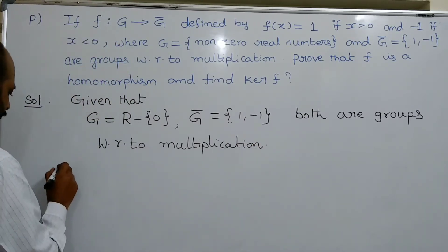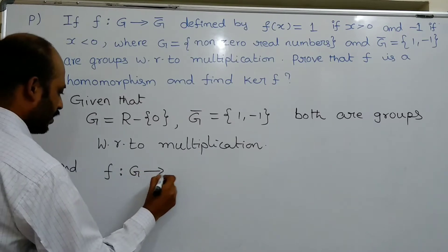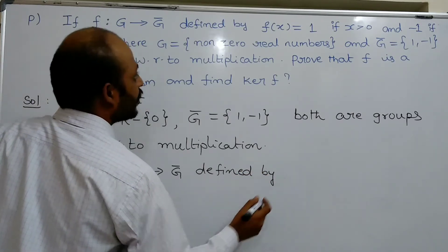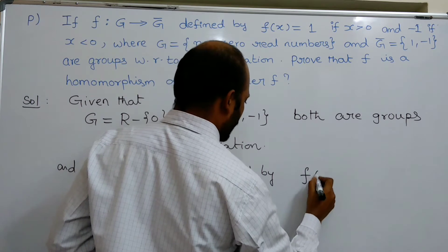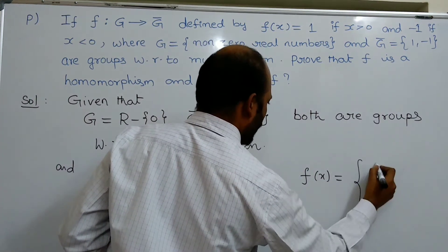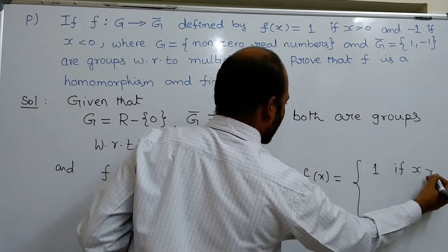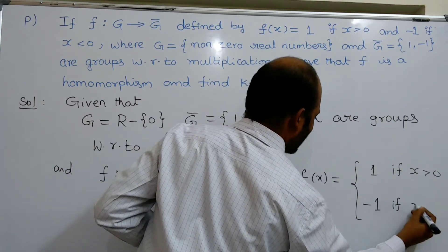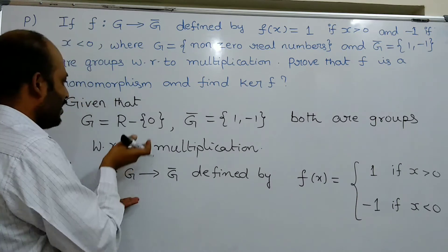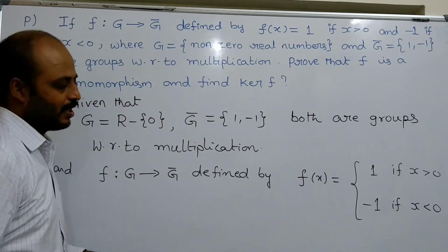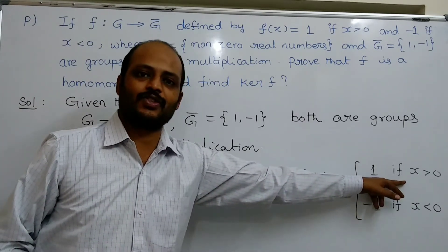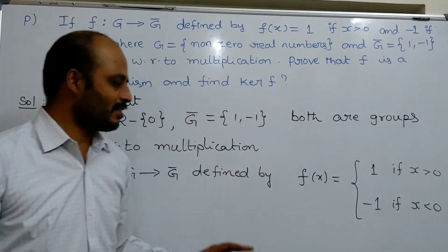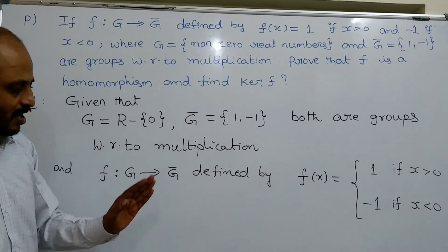There is a function f that maps from G to Ḡ, defined by f(x) = 1 if x > 0, and f(x) = -1 if x < 0. Because the domain G is the set of non-zero real numbers, there is no 0 in this set, so there is no question of defining f at x = 0.